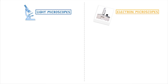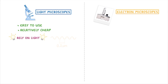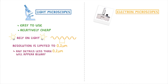The advantage of light microscopes is that they're small, easy to use, and relatively cheap. However, because they rely on light, which has a wavelength of 0.2 micrometers, their resolution is limited to 0.2 micrometers as well.